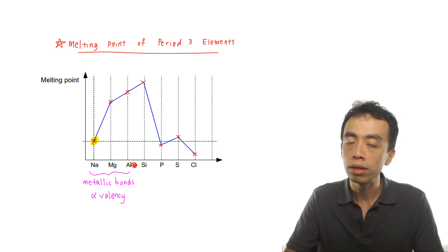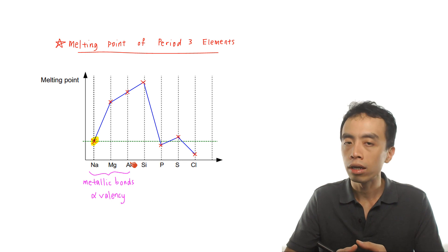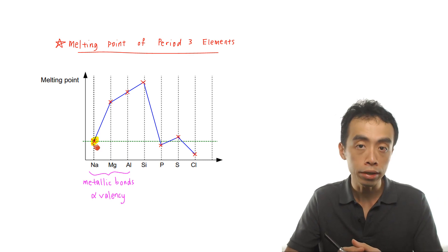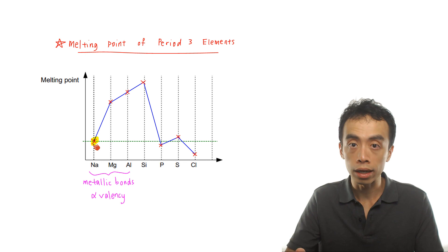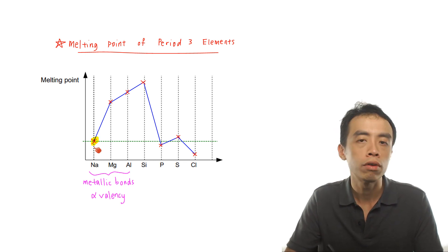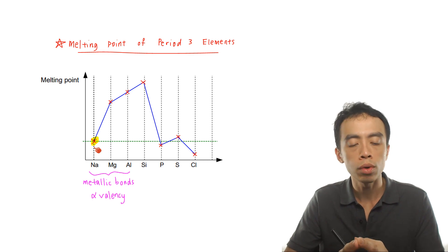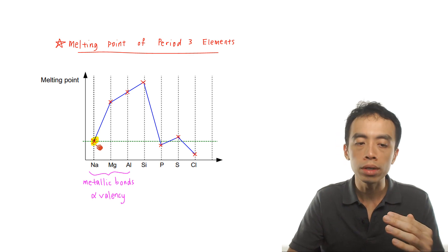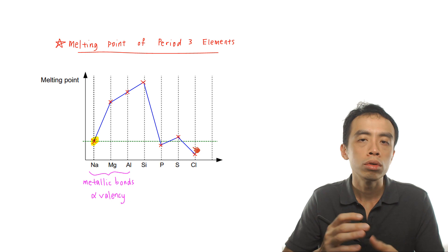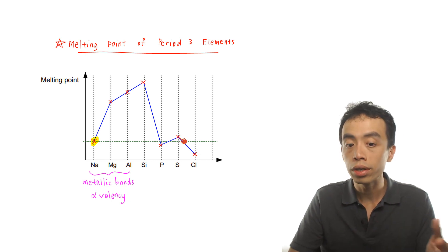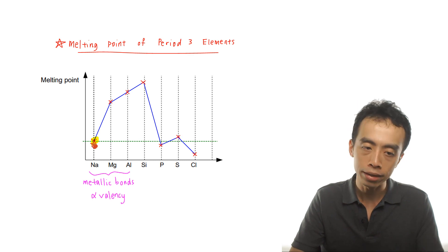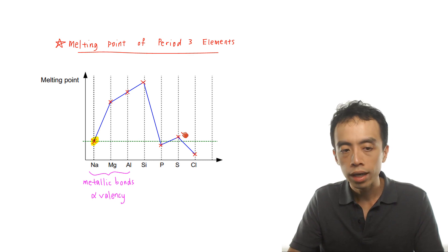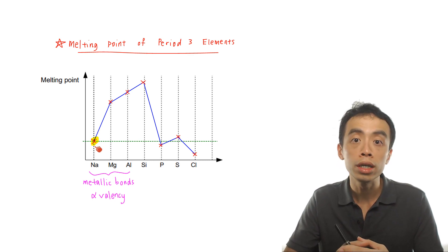Because sodium has only valency 1, the metallic bond in sodium is relatively weak. That is why the melting point of sodium, even though it is a metal, is unusually low. You'll notice the melting point of sodium is actually in the region of simple molecules. So it is not that sulfur has an unusually high melting point — the element which is unusual is actually sodium, which has an unusually low melting point.